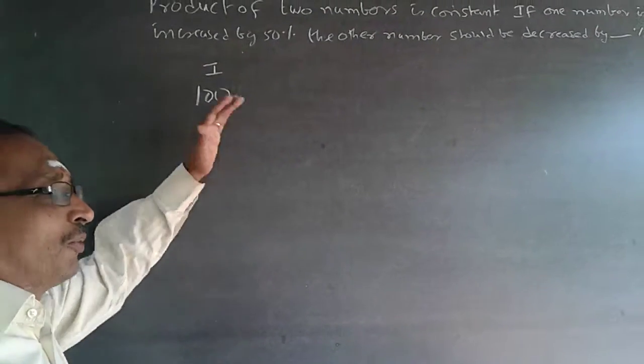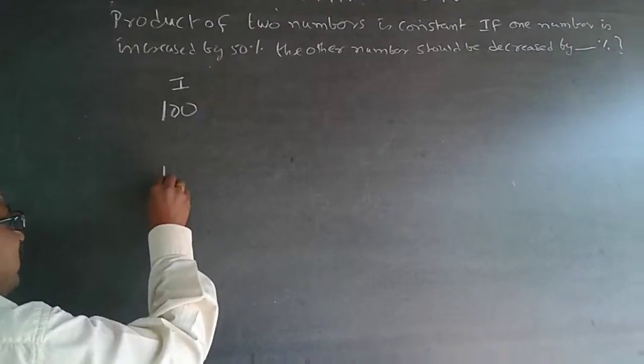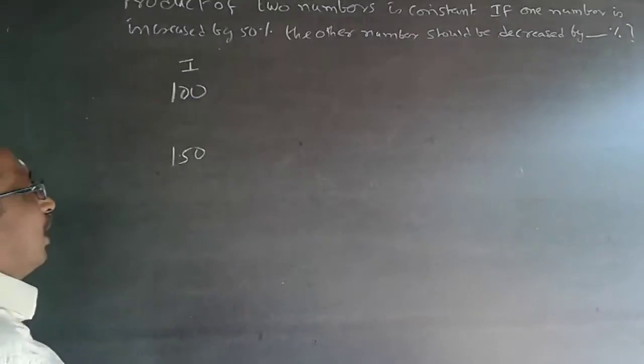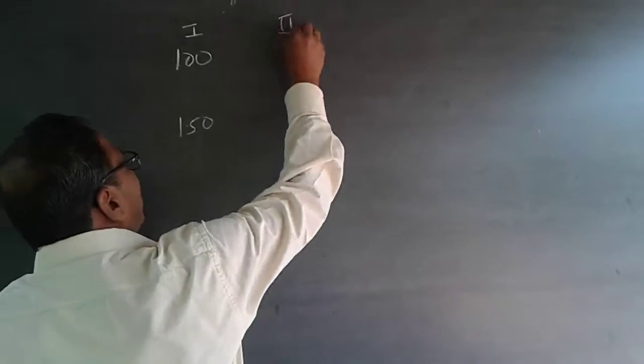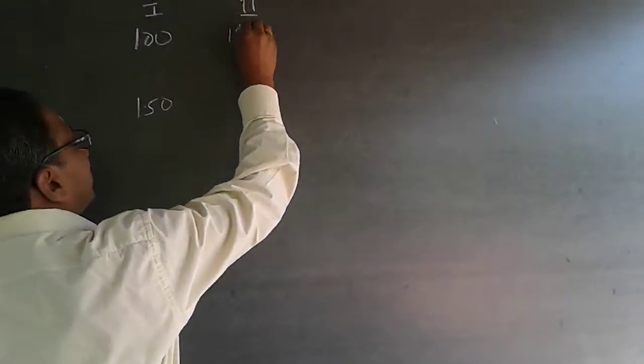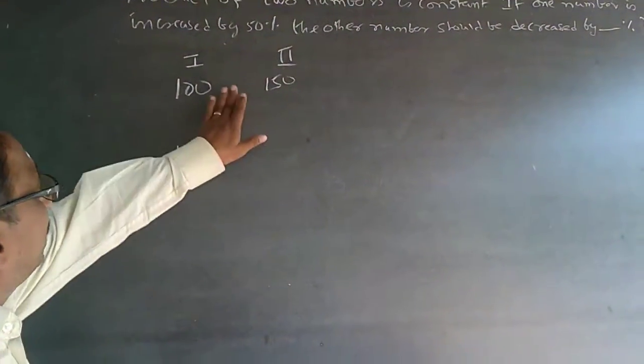This has to be increased by 50%. The advantage of 100 is that 50% of it is simply 50. So don't search for a second number; bring the second number here as 150.